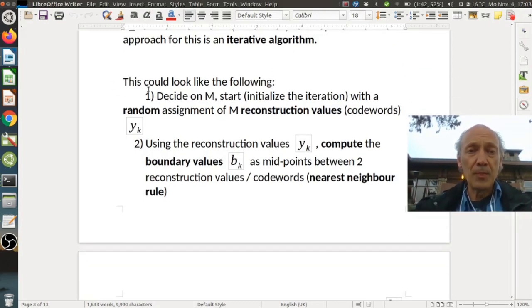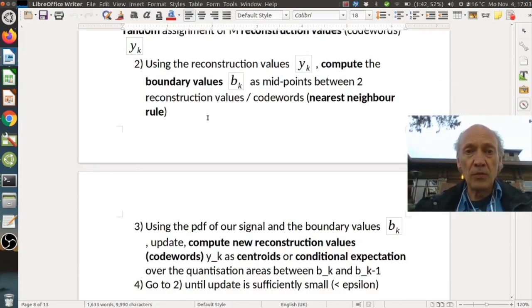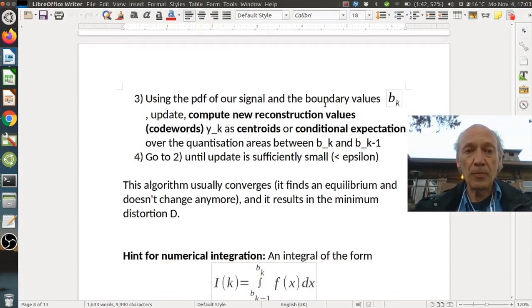So here it is. The first step is decide on m, the number of intervals. Initialize the iteration with a random assignment of m reconstruction values or codewords y_k. A good initial estimation is an equal distribution of the reconstruction values. Then using those reconstruction values, compute the boundary values b_k as midpoints between the two reconstruction values or codewords which comes from the nearest neighbor rule. Next, using the pdf of our signal and the boundary values b_k, update or compute the new reconstruction values or codewords y_k as the centroids or conditional expectation over the quantization areas or intervals between b_k and b_{k-1}.